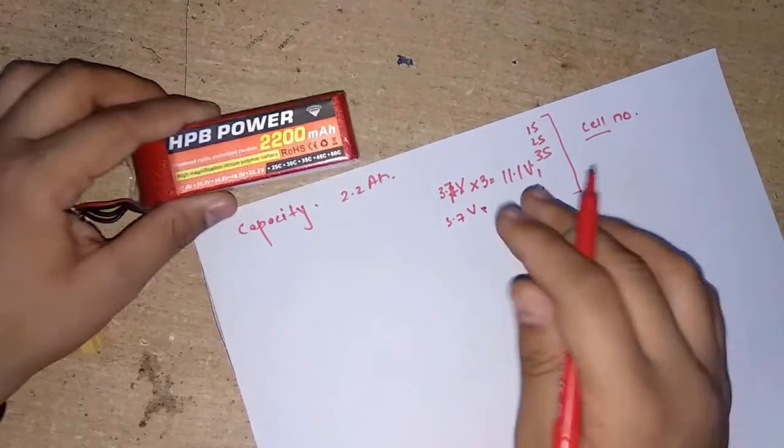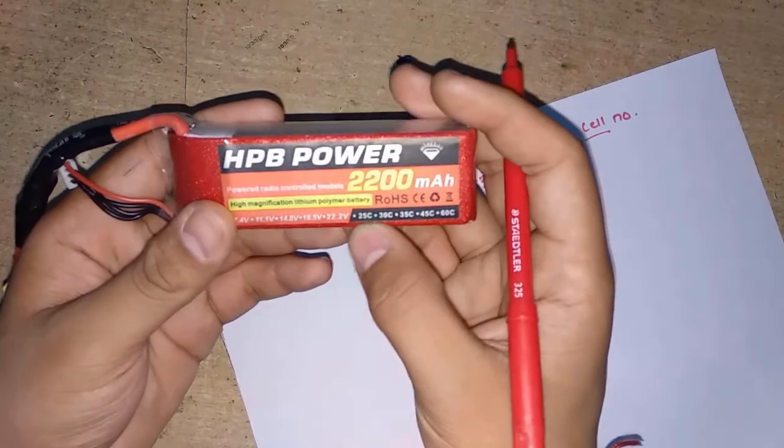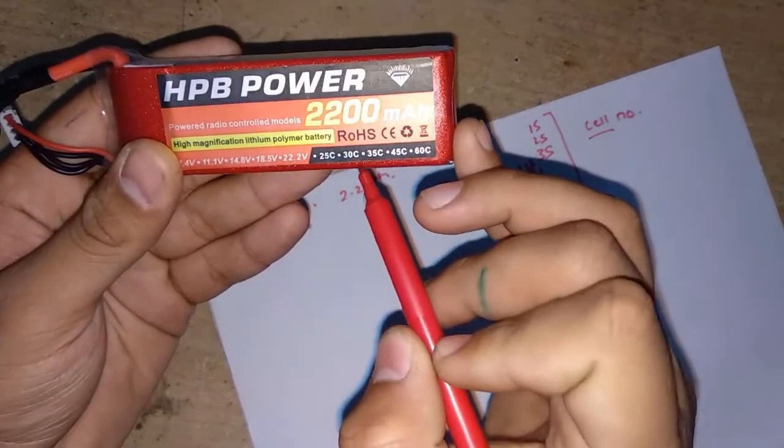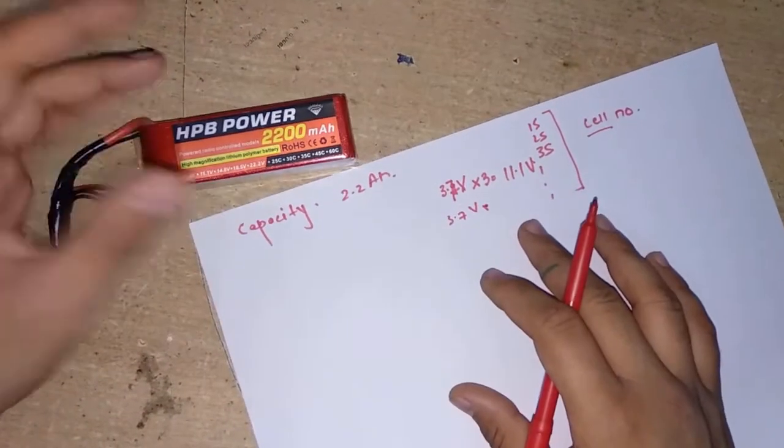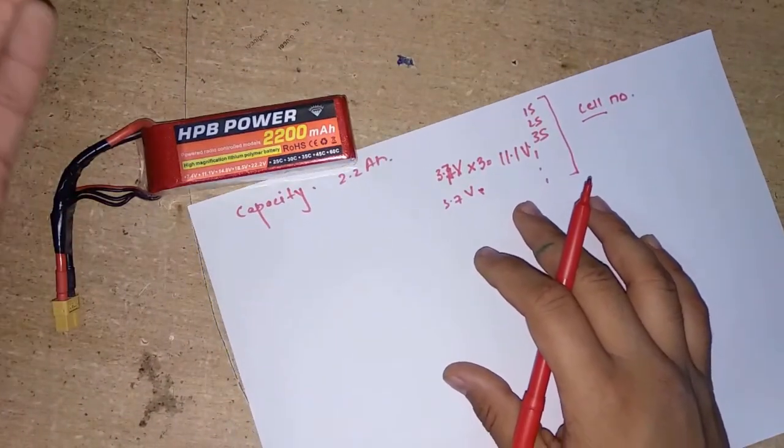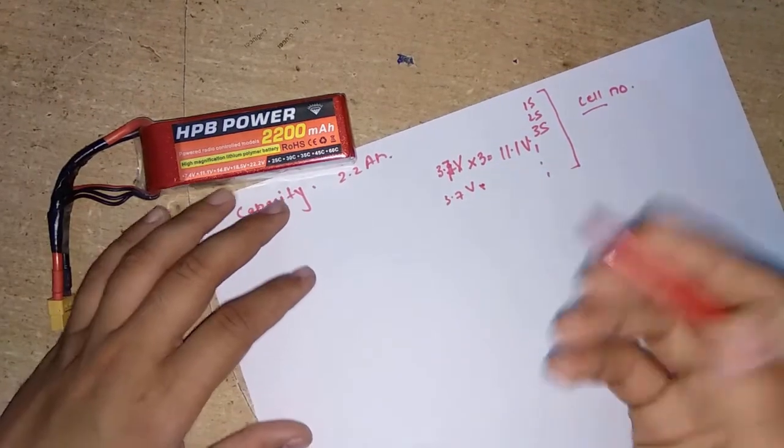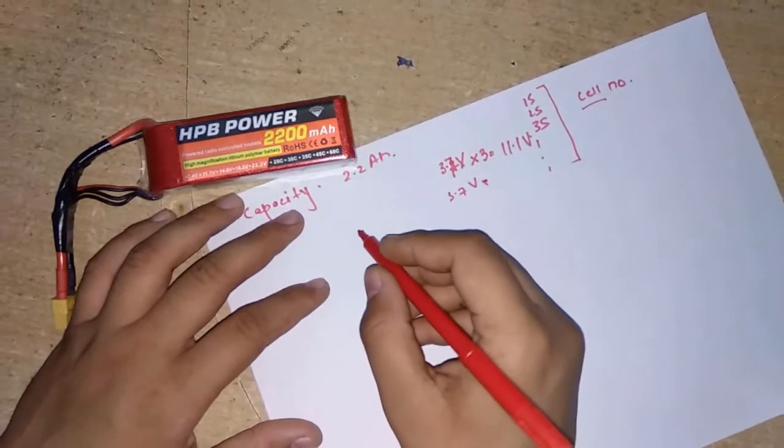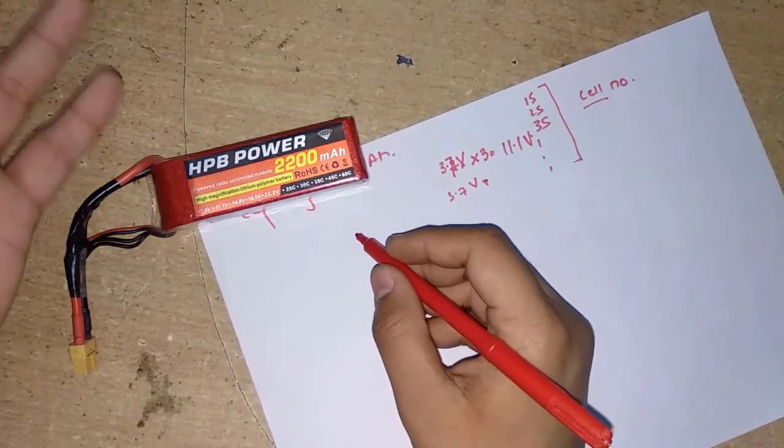The last thing which is left is your C rating. Here you can see it's 25C, 30C, or 35C and so on. For branded batteries like Orange or Zippy, you'll get around 40C and 60C also. What that really means is, as I told you in the beginning, these batteries can spill out a lot of current.